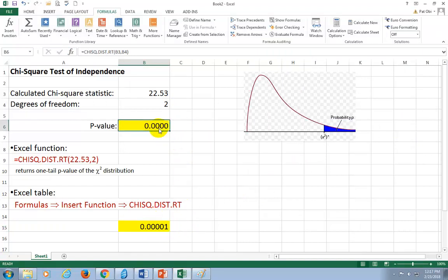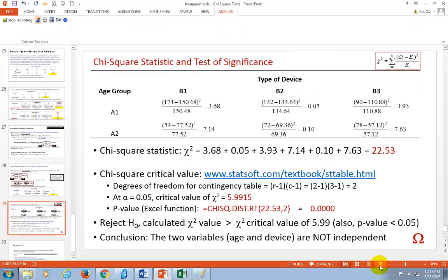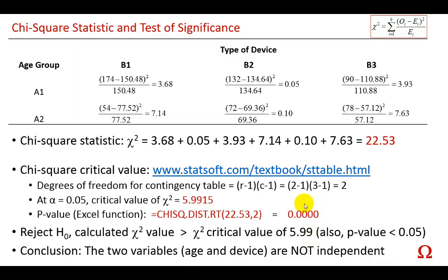Alright. So, based on this outcome, we reject the null hypothesis and conclude that the two variables, customer age and the type of computer device, are not independent.